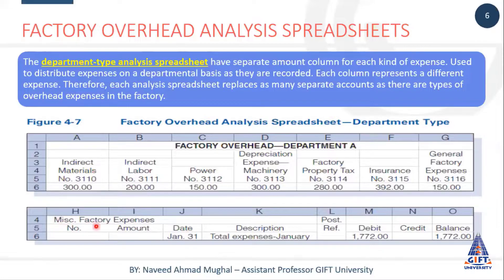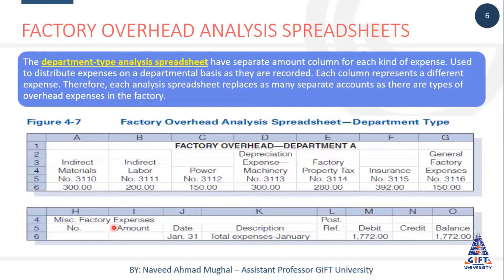Toh yeh dekhein - yeh ek factory overhead ka, ya is tarah se kehle ke miscellaneous factory expenses ka ek account hai, jis mein amount hum log ne yahan peh mention ki hui hai. Date yeh hai, description yeh hai, post reference yeh hai, debit itna hua, credit itna hua, aur balance itna hua. Toh basically miscellaneous factory expense account mein 1772 jo hai yeh debit ho raha hai - yeh expense hai.